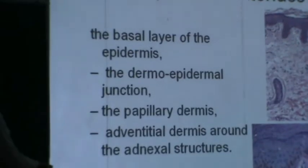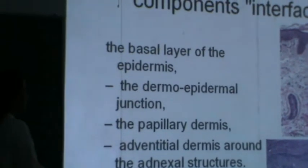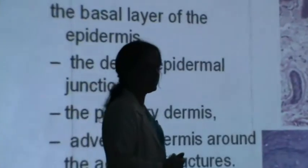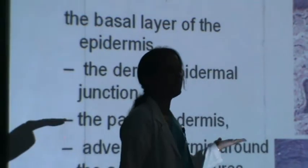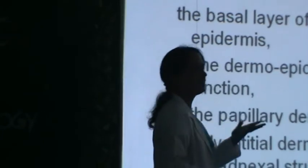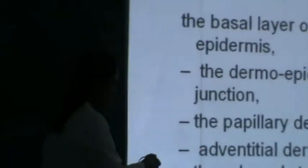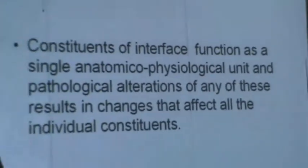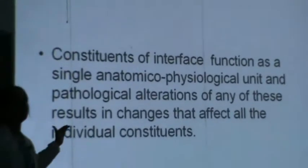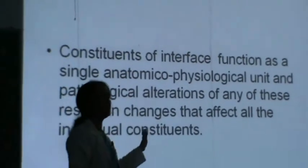The papillary dermis is the superficial aspect; the deeper dense reticular dermis lies below. The adventitial dermis is around the adnexal structures. This particular slide is highlighting a layer — the basement membrane — using a PAS (Periodic acid–Schiff) stain, which highlights the basement membrane. The constituents of the interphase function as a single anatomical-pathological unit, and pathological alterations of any of these components result in changes that affect all individual components of the interphase. That is why some diseases with these pathological changes are put under interface dermatitis.